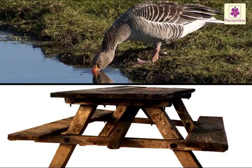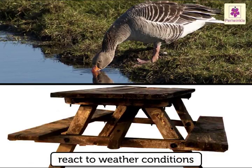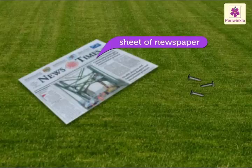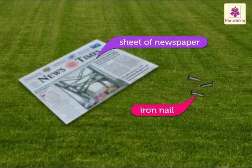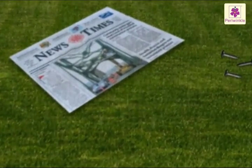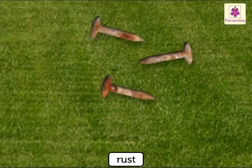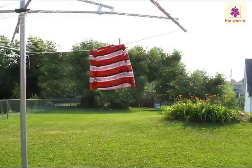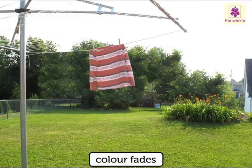Both living and non-living things react to weather conditions, but they react in different ways. If you leave a sheet of newspaper and an iron nail outside for a few days and there is rain, they will get soaked — the paper will decay and the iron nail will rust. If you keep a piece of coloured cloth out in the sun for a few days, the colour fades.